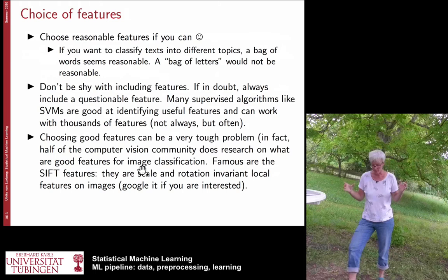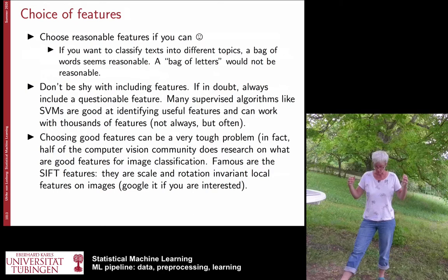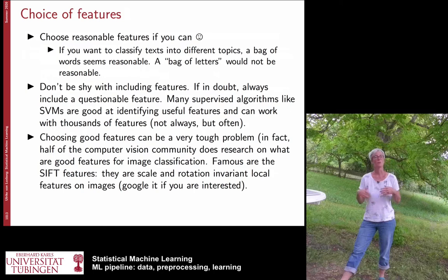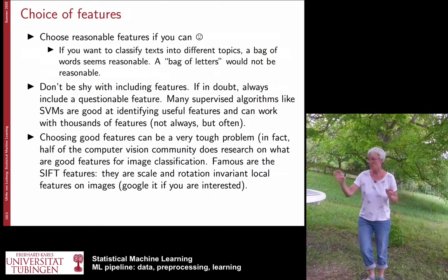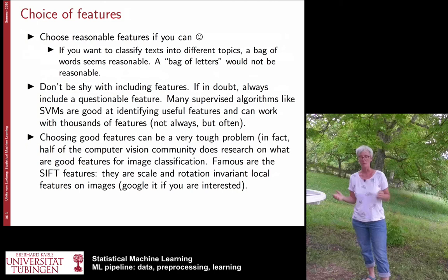Choosing features can be very tough. Before deep neural networks, the entire computer vision community was busy constructing good features for object detection. Raw pixel values were not sufficient — people needed to construct features that extract edges, SIFT features, and local statistics. By now, for images this is less important because deep networks work on raw images, but at that time a whole community was dedicated to identifying good features.